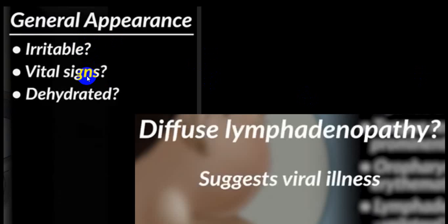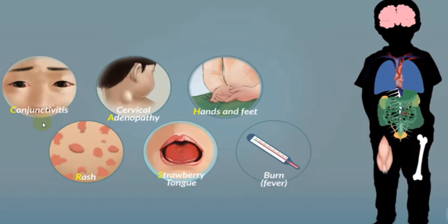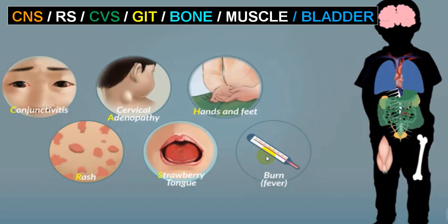The child may be irritable, vital signs will be affected, and there may be dehydration with unilateral lymphadenopathy. If there is diffuse lymphadenopathy, it suggests viral illness. Whenever a child comes with conjunctivitis, cervical lymphadenopathy, rash, strawberry tongue, hand changes, and fever — do suspect Kawasaki. Good number of times, this will be associated with CNS involvement, respiratory involvement, cardiovascular involvement due to coronary artery vasculitis, GIT findings, and possibly bone, muscle, and bladder involvement.